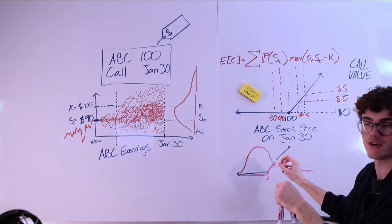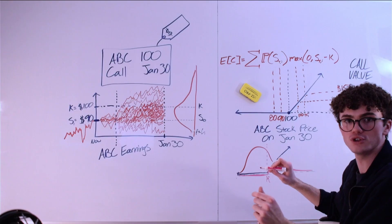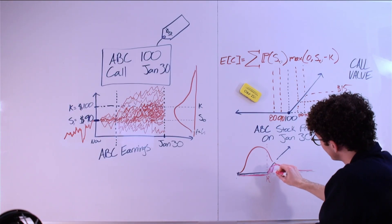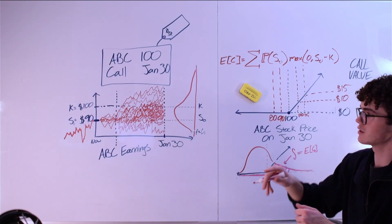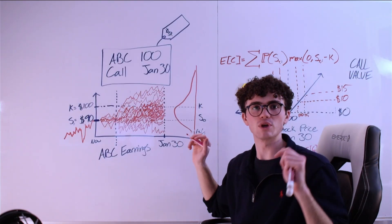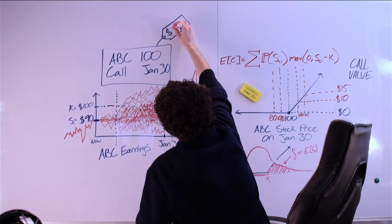All we have to do to find the expected value is integrate this function here. We integrate this and now we have the expected future value of this call option. We have our expected value of the call option and we discount it and we'll say that's maybe like $3.